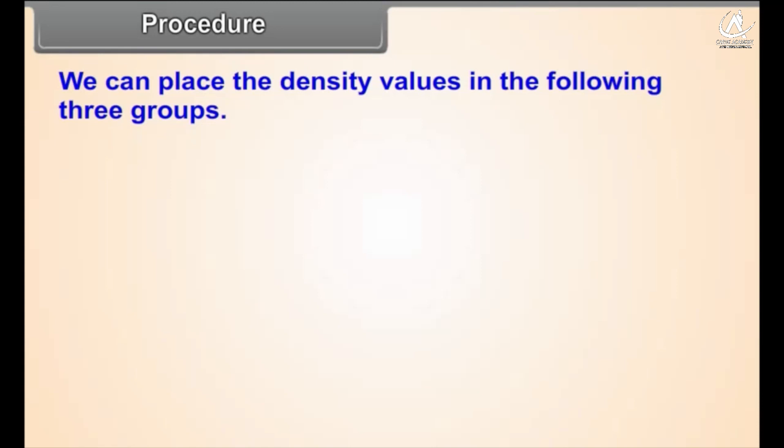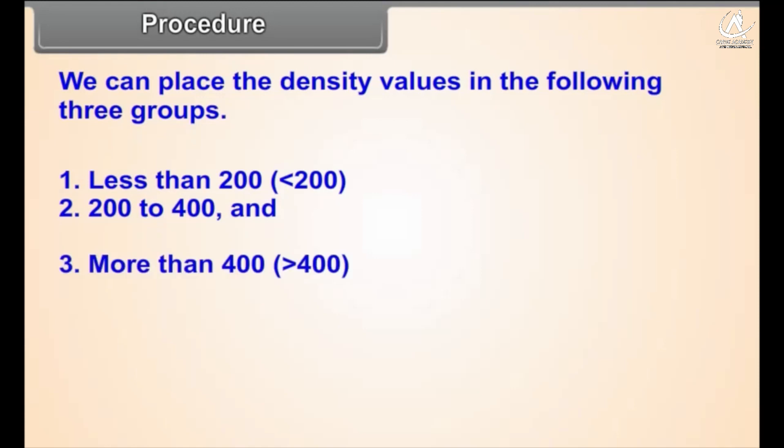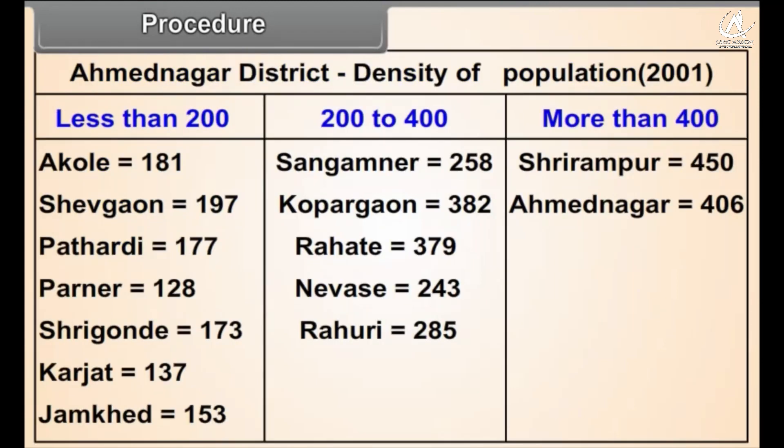We can place the density values in the following three groups: 1. Less than 200 (<200), 2. 200 to 400, and 3. More than 400 (>400). Check the density of population of the talukas in the table alongside.